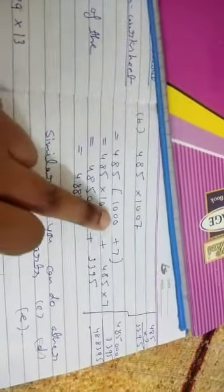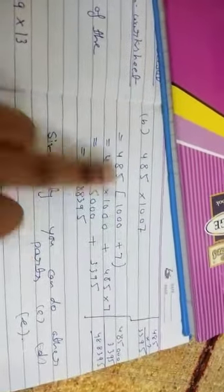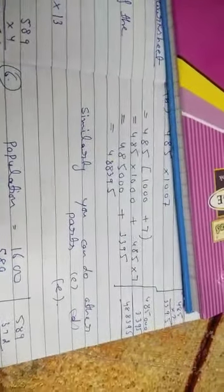Part B is 485 into 1007. We split 1007 into 1000 plus 7. 485 multiplied by 1000 and 485 multiplied by 7. This is how to do this part. In this way, you will do the other parts C, D and E in your notebook.